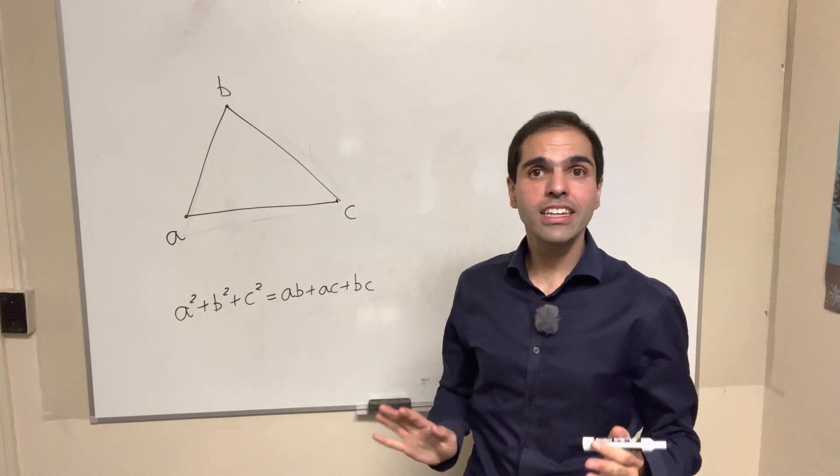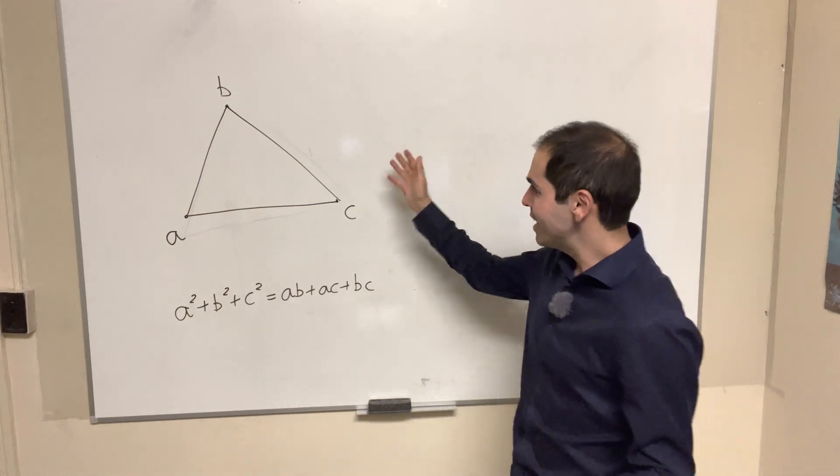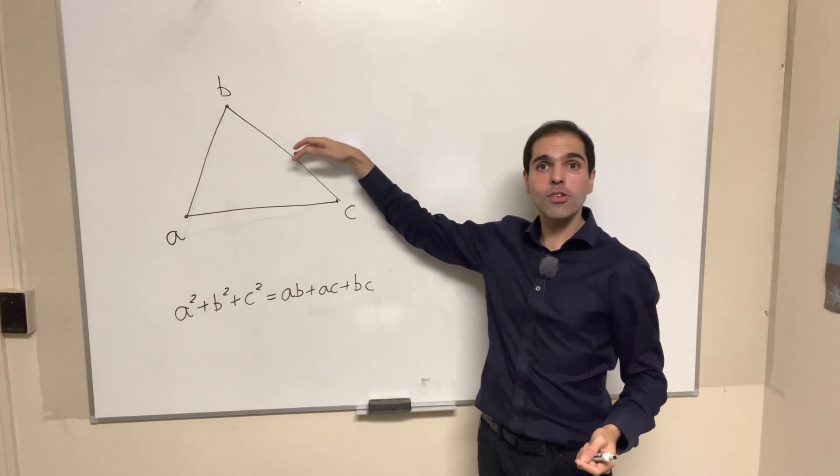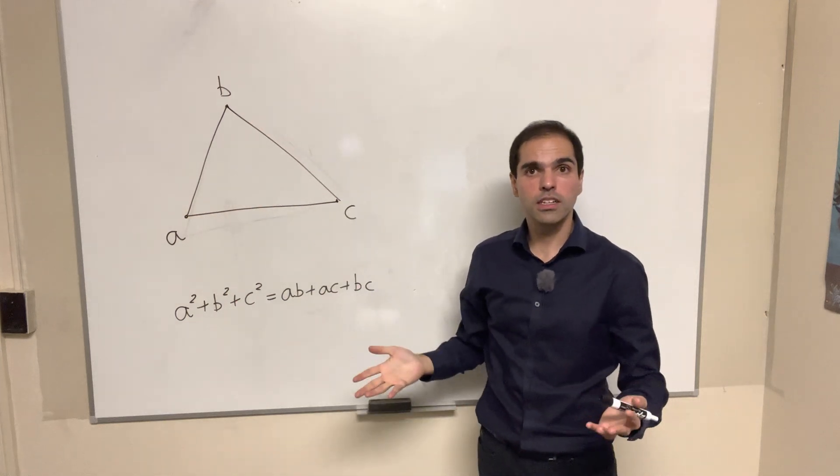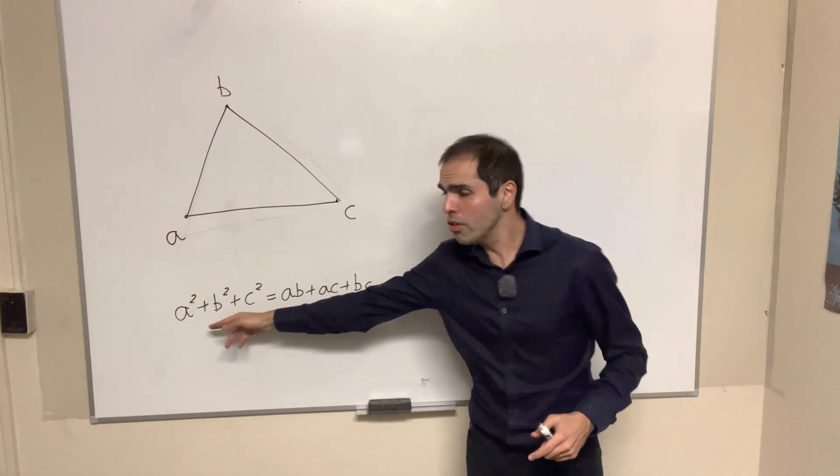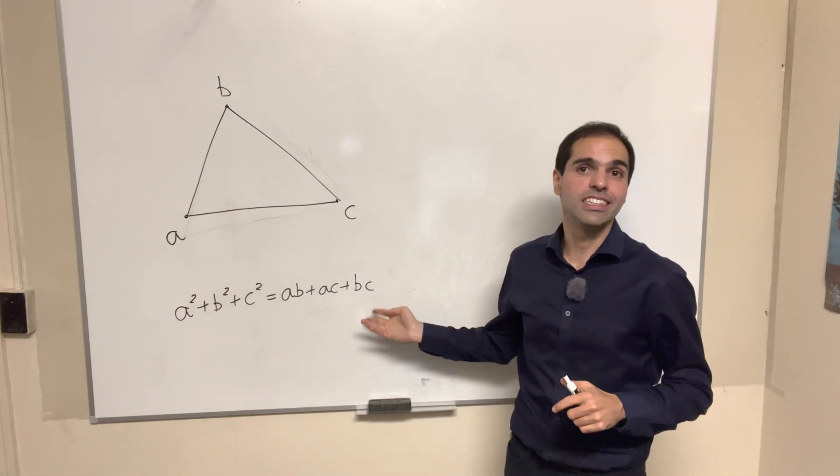Here's a really neat problem suggested by Steven Strogatz from Cornell. Suppose you have an equilateral triangle with vertices a, b, and c in the complex plane. Show that the following sort of Pythagorean identity is satisfied.